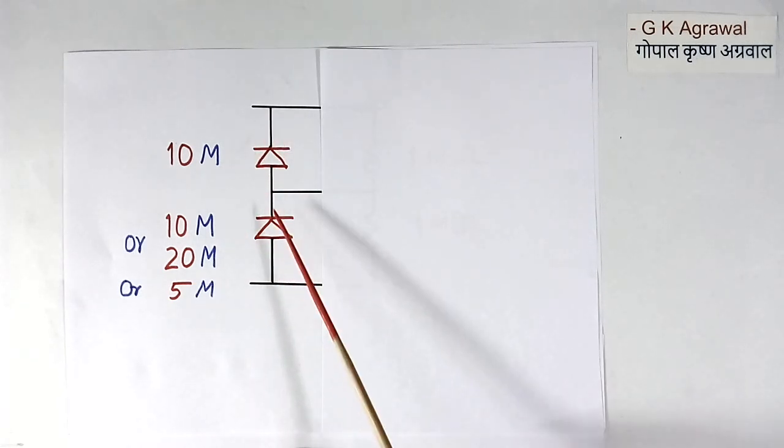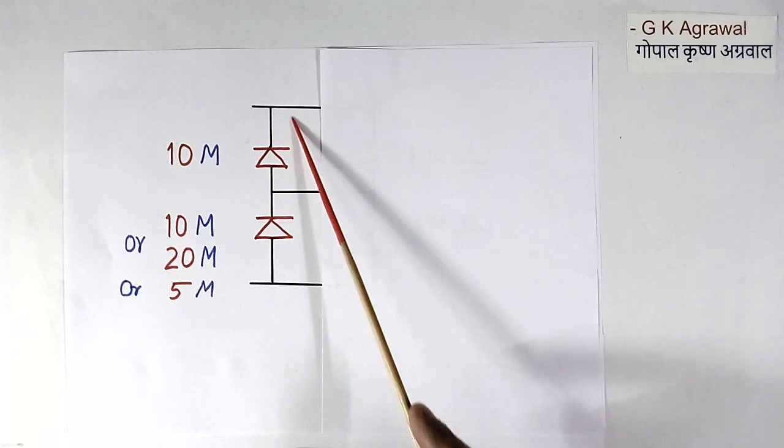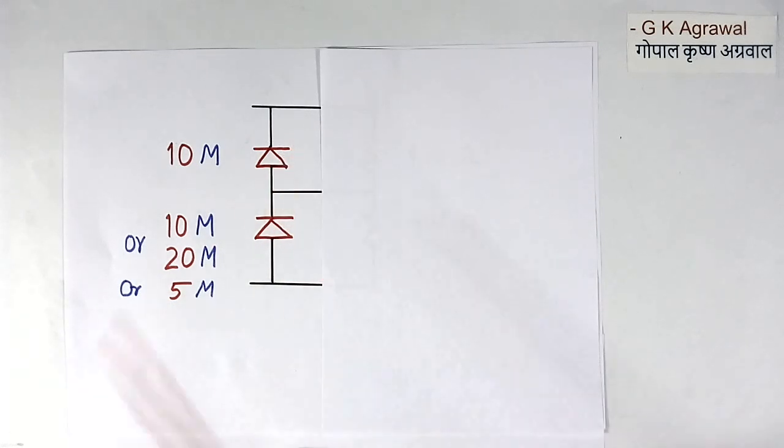So voltage division will not be equal. If we give 2000 volt, we will not get 1000 here and 1000 here. We will get less or more because of variation in resistance of this diode in reverse bias condition. So what we should do.